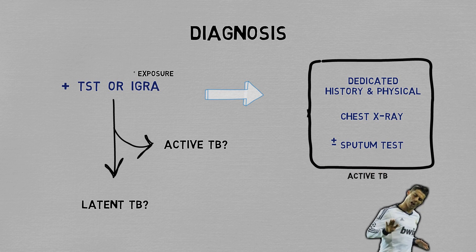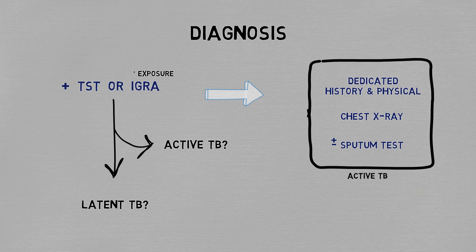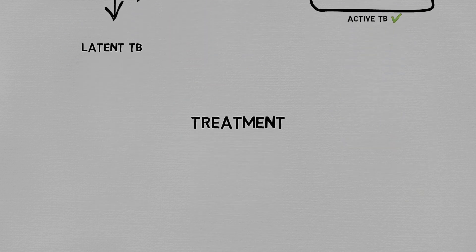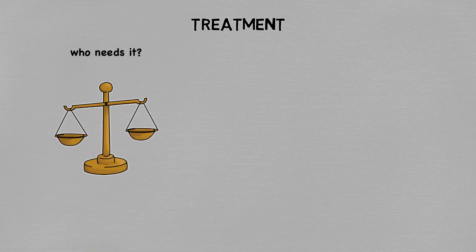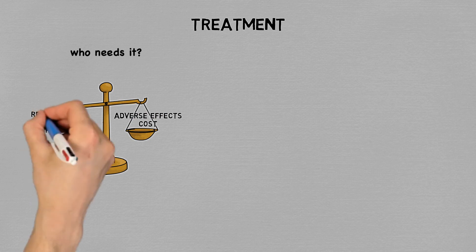We're not going to dive too deep into the diagnosis of active TB right now, but you should know that either a positive sputum study or a convincing clinical picture can establish a diagnosis of TB. If active disease has been ruled out and a person has positive immunologic tests, it's determined that they have latent TB. The next question is: does everyone who has latent TB need treatment? And the only way to answer that is to compare the risks and benefits of treatment versus no treatment — specifically, how bad the risk of progression is, versus the side effects from the treatment, the costs, and how much the treatment actually lowers the risk of progression.